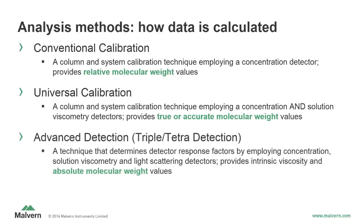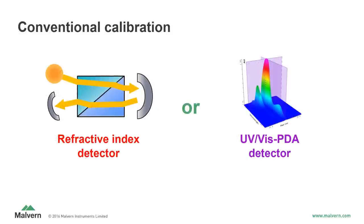The third analysis method is advanced detection, also known as triple or tetra detection, depending on which detectors are employed. Advanced detection uses a light scattering detector and a viscometer in conjunction with at least one concentration detector in order to provide intrinsic viscosity and absolute molecular weight values. Conventional calibration relies on a single concentration detector — either a refractive index or UV-Vis or photodiode array detector — making it the most economical GPC analysis method.